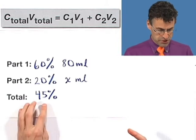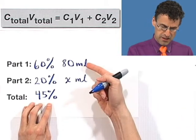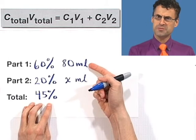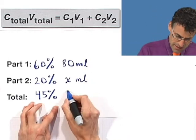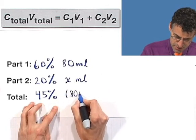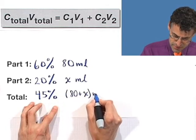But we can say something about it. We don't have to call it a new unknown because we know that the total volume is going to be the volume of the first part plus the volume of the second part. I sound like a lawyer. The volume of the first part plus the volume of the second part. So that's going to be, if you add these, 80 plus x milliliters.